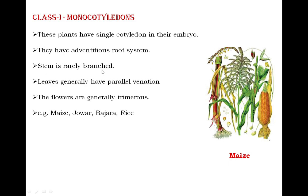In monocotyledons, the stem is rarely branched. In plants like jowar, bajra, and rice, you will not see branches on the stem. The leaves of monocotyledonous plants generally have parallel venation — in these lengthy leaves, various veins run parallel to each other from the base to the tip without intersecting.